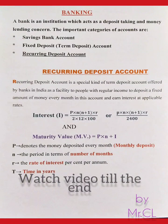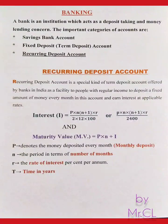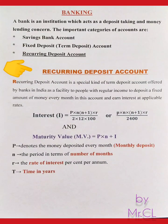The topic for Class 10 is Banking. What is a bank? A bank is an institution which acts as a deposit-taking and money-lending concern. The important categories of accounts are: saving bank accounts, fixed deposit or term deposit accounts, and recurring deposit accounts. We have to study the recurring deposit account.